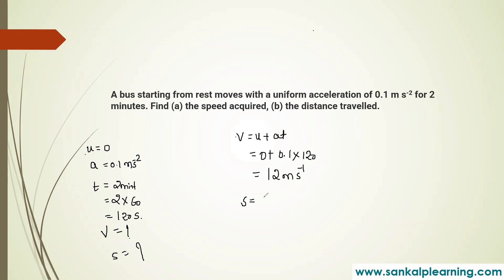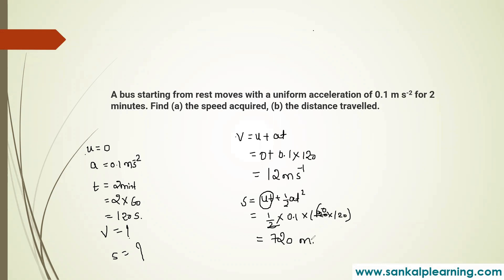The distance covered by the body uses the formula S equals UT plus half AT square. Since U is 0, the UT term is zero. So S equals half into 0.1 into 120 squared. That is half into 0.1 into 14400. 0.1 into 120 is 12, into 60 gives 720. The distance is 720 meters.